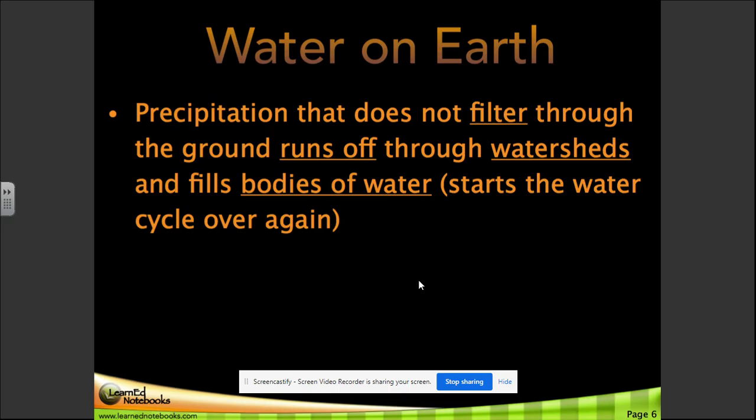Precipitation that does not filter through the ground runs off through watersheds and fills bodies of water, and the water cycle starts all over again.